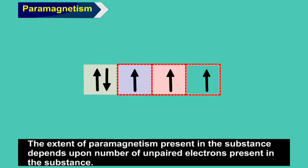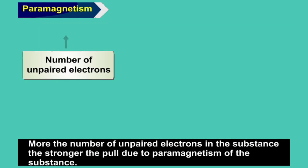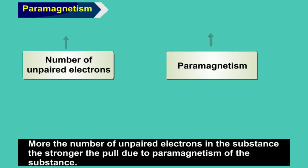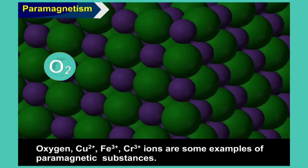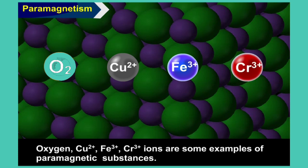The extent of paramagnetism present in the substance depends upon the number of unpaired electrons present. The more the number of unpaired electrons, the stronger is the pull due to paramagnetism. Oxygen, Cu2+, Fe3+, and Cr3+ ions are some examples of paramagnetic substances.